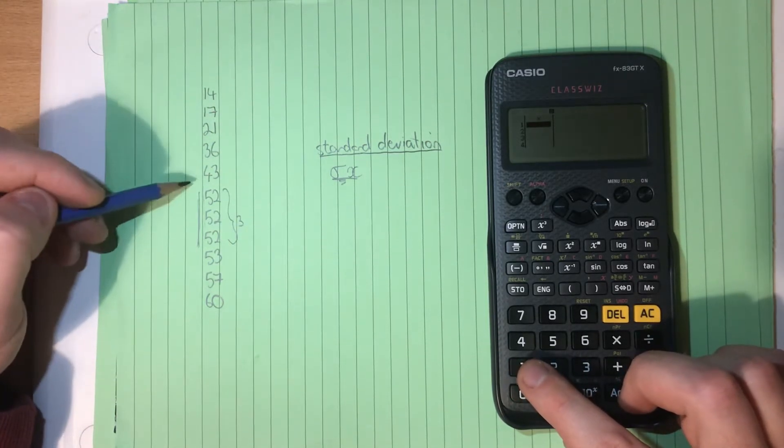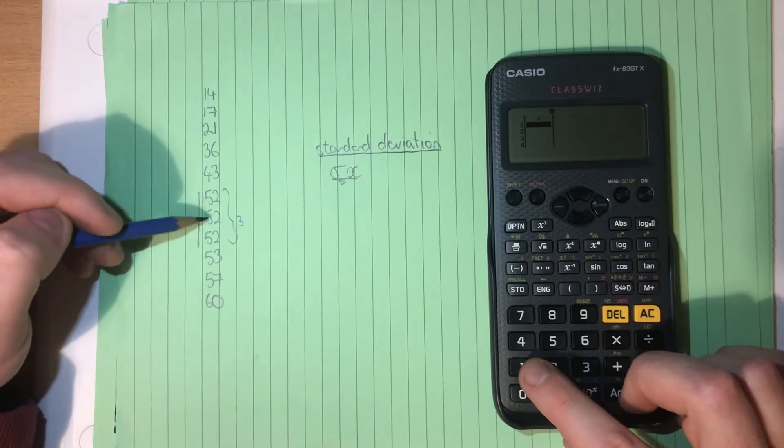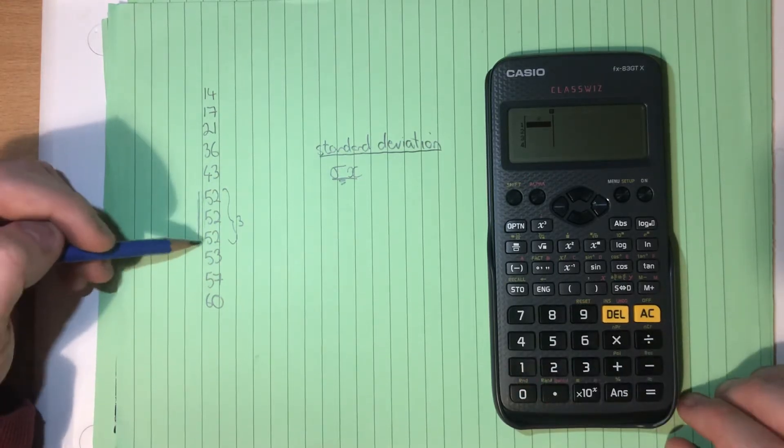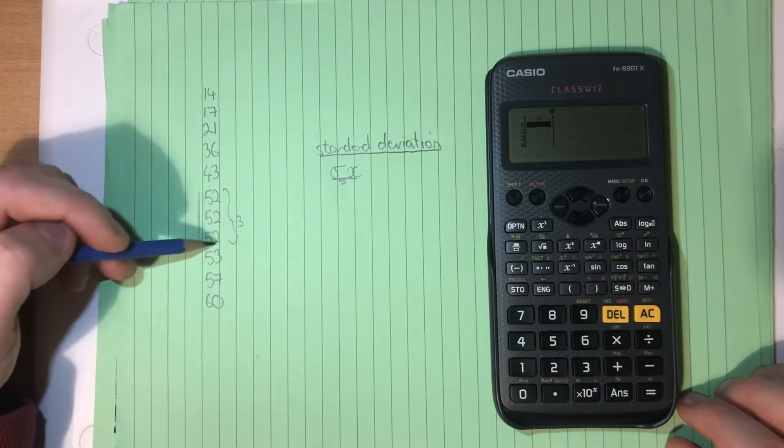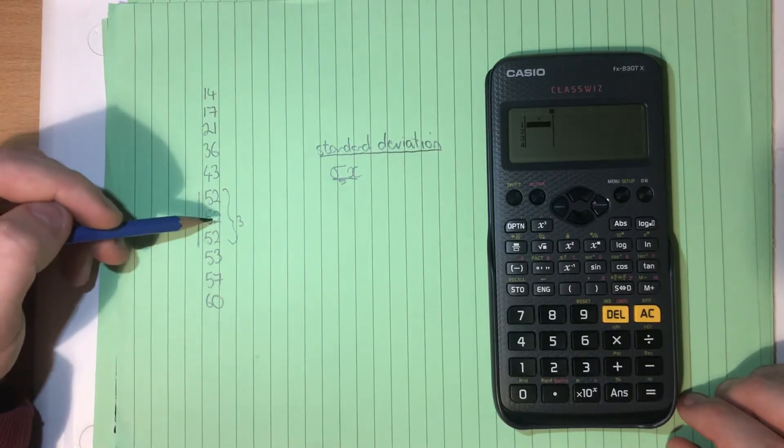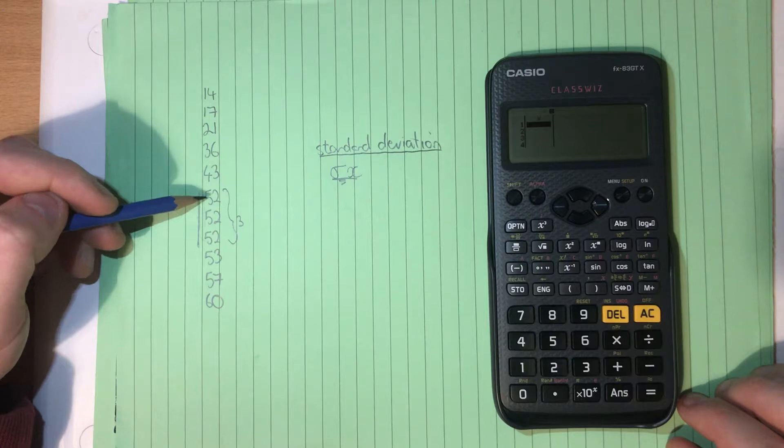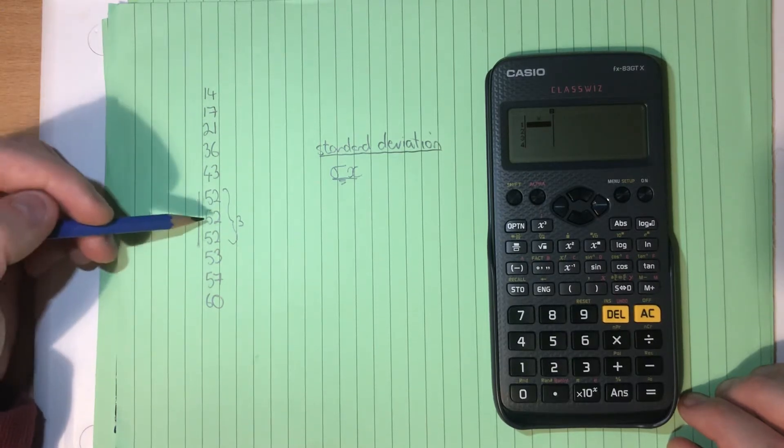So I could go 14, 17, and I could get to here and go 43, 52, 52, 52. But I think that's kind of time-wasting. So I'm going to set it up so that I can put in the frequency as well as the variable value.